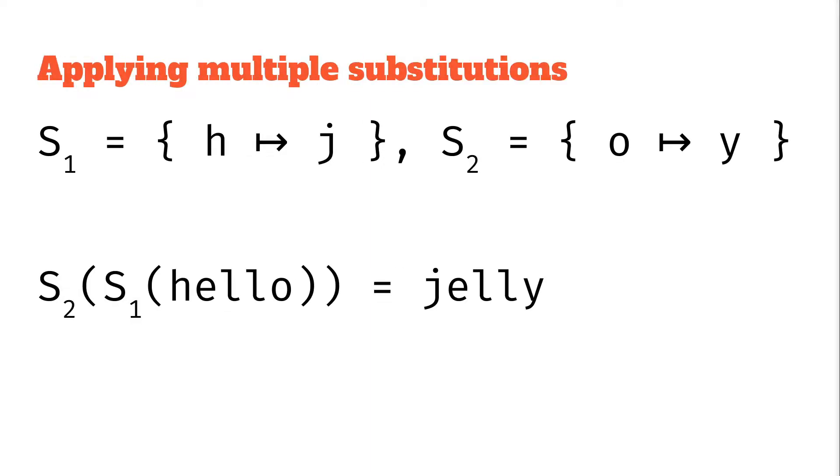We can extend this concept to applying multiple substitutions. We can look at applying different substitutions. So here we've got s1 which takes h to j and s2 which takes o to y. When we apply s1 first and then s2 what we get is jelly. So h turns into j and the o turns into y we get jelly.